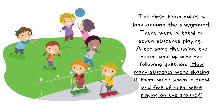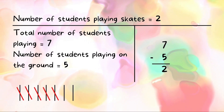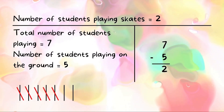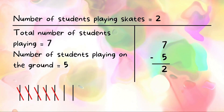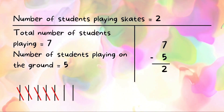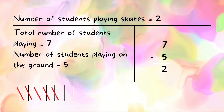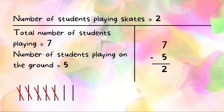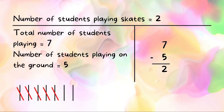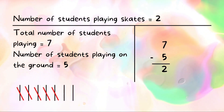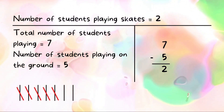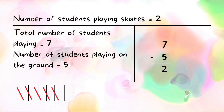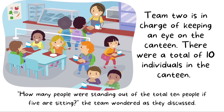Seven sticks are aligned, out of which five are cancelled. Seven minus five equals two. Therefore, the number of students playing on skates equals two.